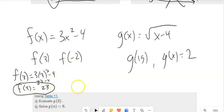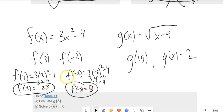f of negative 2, plug it on in there. 3 negative 2 squared minus 4. Negative 2 squared is positive 4. 12 minus 4 is 8. f of negative 2 is 8. This function f, this process, square the input, multiply by 3, subtract 4, maps negative 2 to 8.